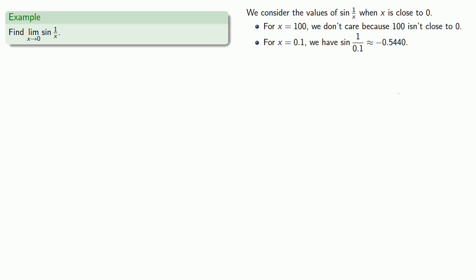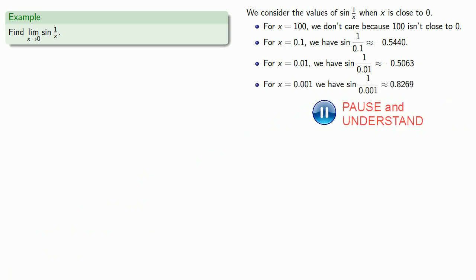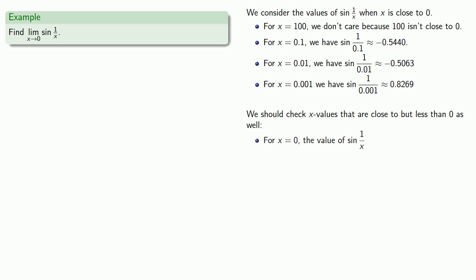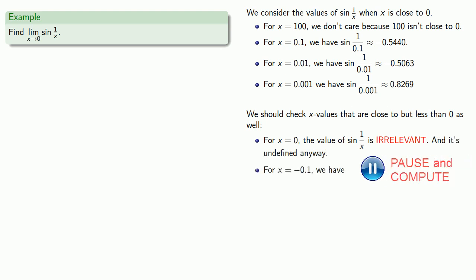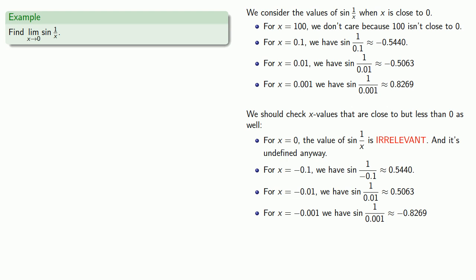And again, if you want to go into a career in politics or political commentary, one piece of evidence is all you need, sometimes even less. But if you want to succeed in mathematics or in life, then you may want to take a look at more than one piece of evidence. So let's try x equals 0.01. And how about x equals 0.001? And again, all of the values we've chosen are close to 0, but they're all larger than 0. So we should look at x values that are close to 0 but less than 0 as well. So if x equals 0, the value of sin(1/x) is not relevant, and that's a good thing because it's undefined in any case. How about x equals negative 0.1 or negative 0.01 or negative 0.001?